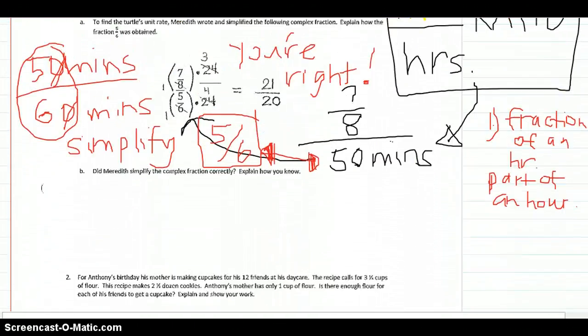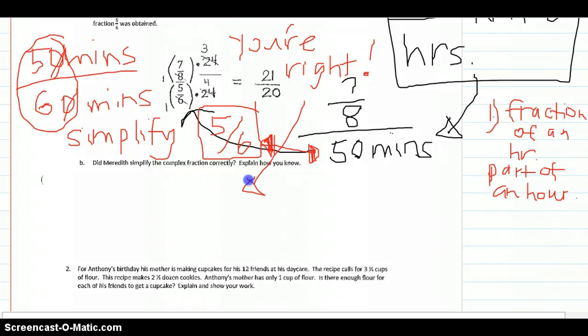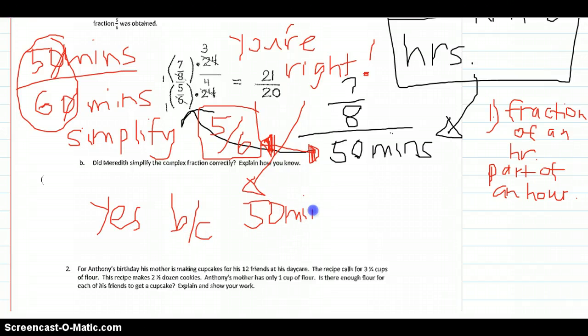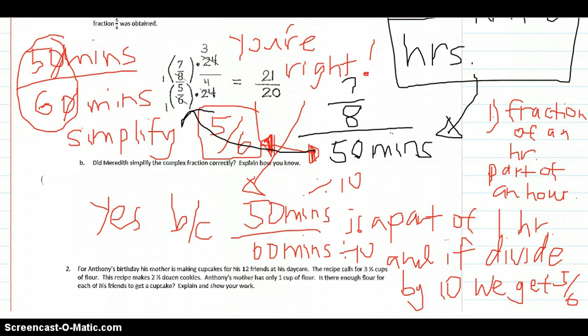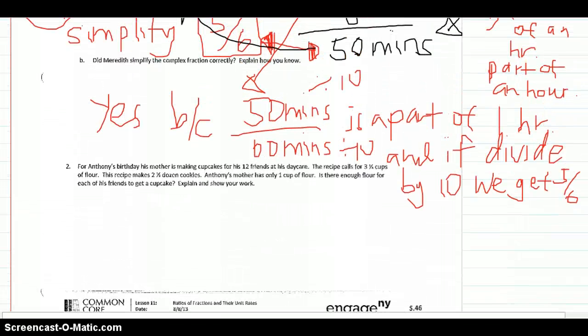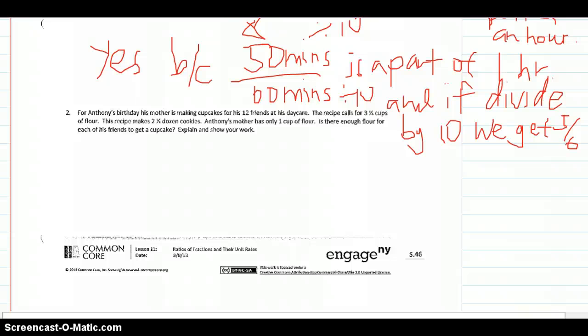Let's go ahead and look at B. We just answered B. Yes, because 50 minutes out of 60 minutes is a part of one hour. If you divide by 10 in the numerator and denominator, so we're going to divide here and here, we get 5 sixths. I'm so sorry, I'm going to buy a new stylus because the writing is terrible.